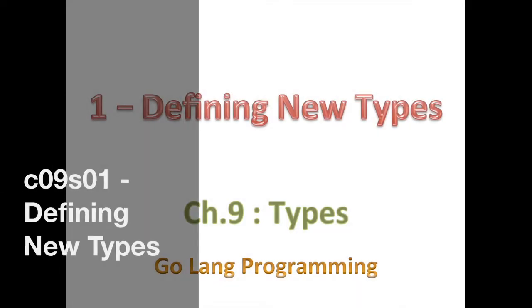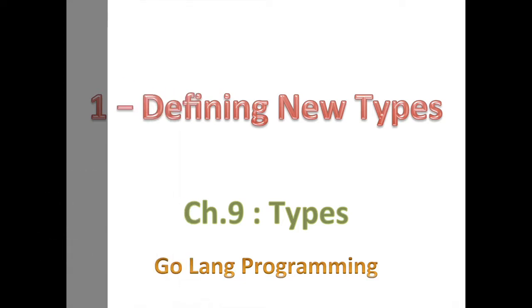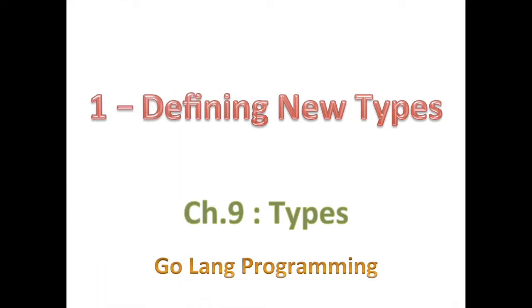Hello, good day and welcome back. So today we're going to start a new chapter and it's going to be on types. Now we sort of talked about types before. We did talk about types, but we didn't spend too much time talking about defining new types. In chapter two, we looked at integer type, Boolean, and those sort of fundamental basic types that Go language provides.